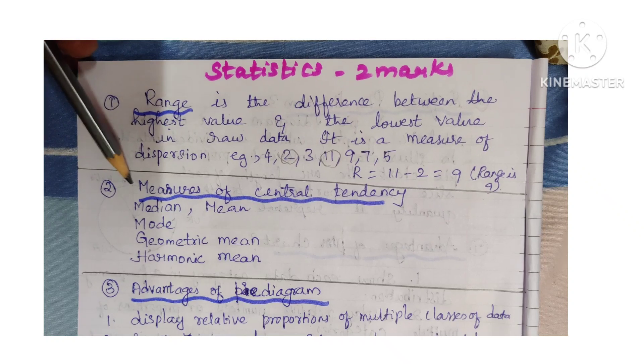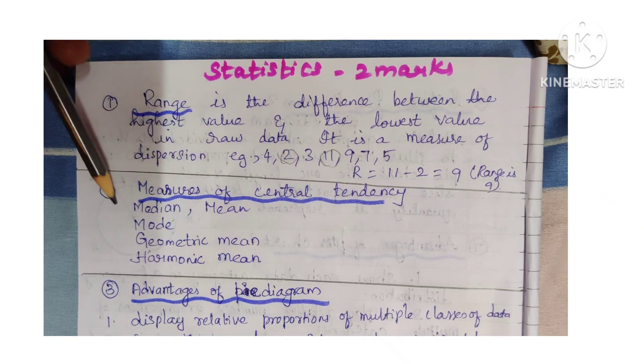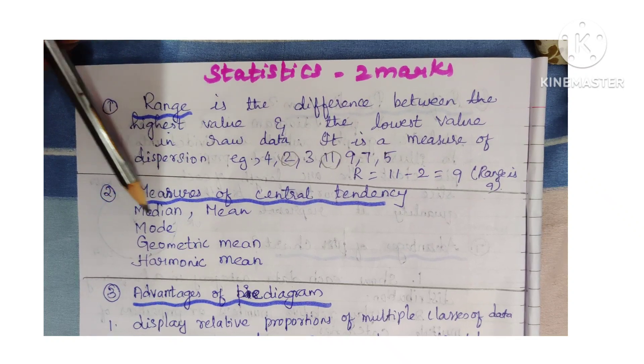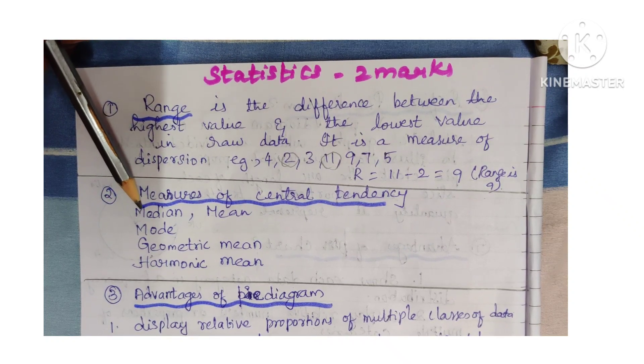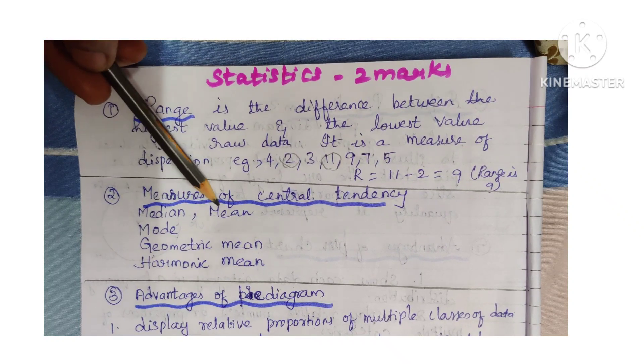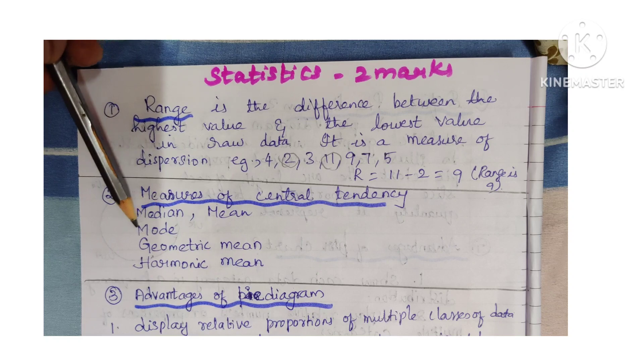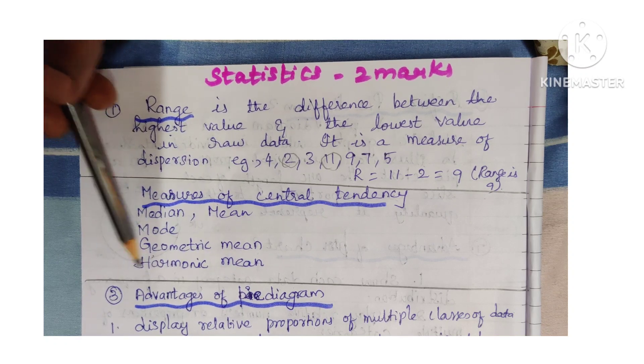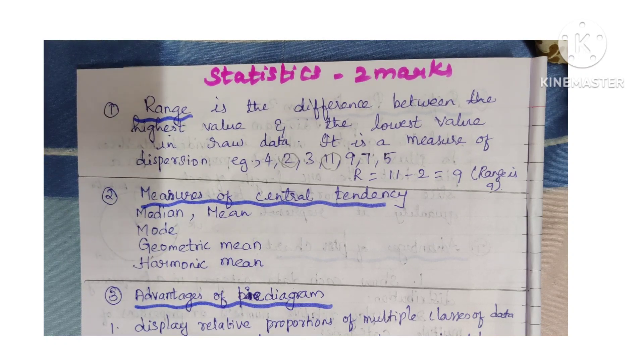Next is measures of central tendency. Under this you have mean, median, mode, geometric mean, and harmonic mean.